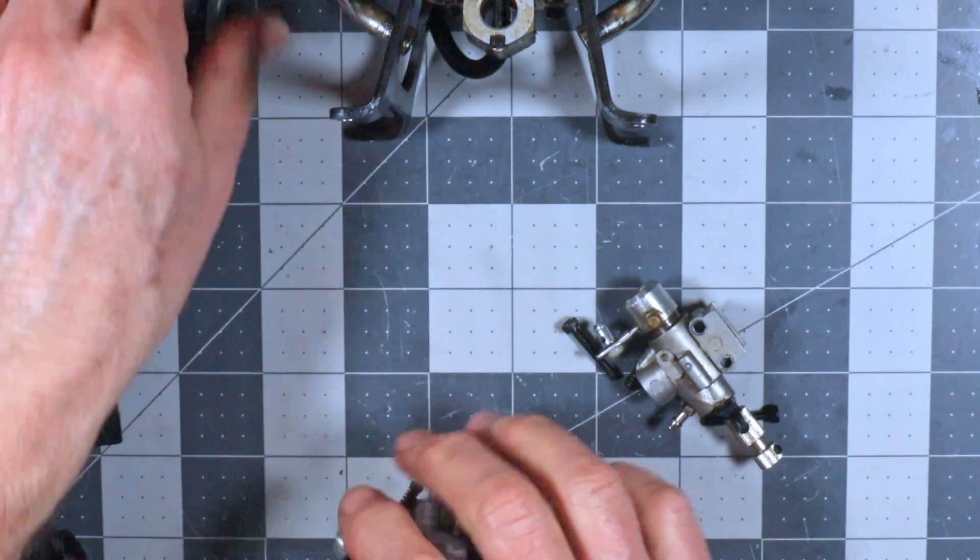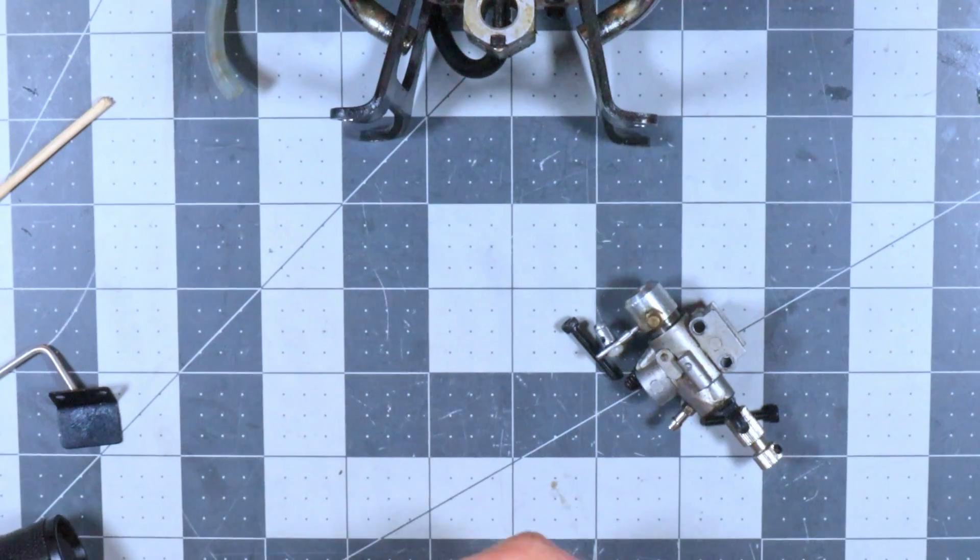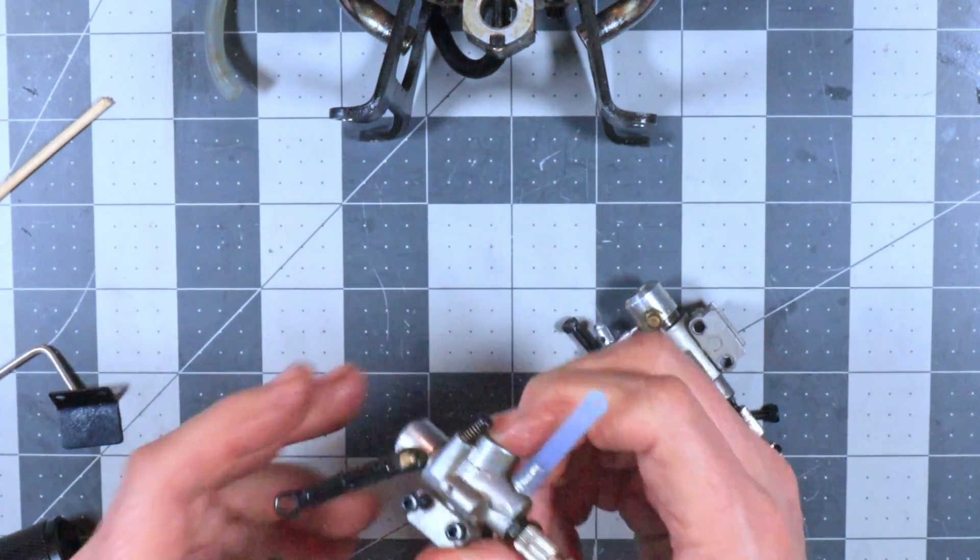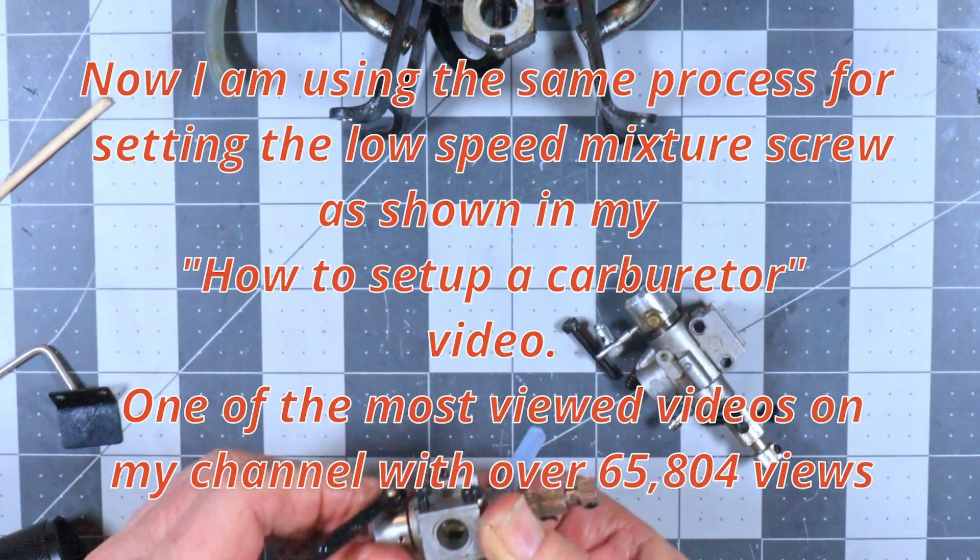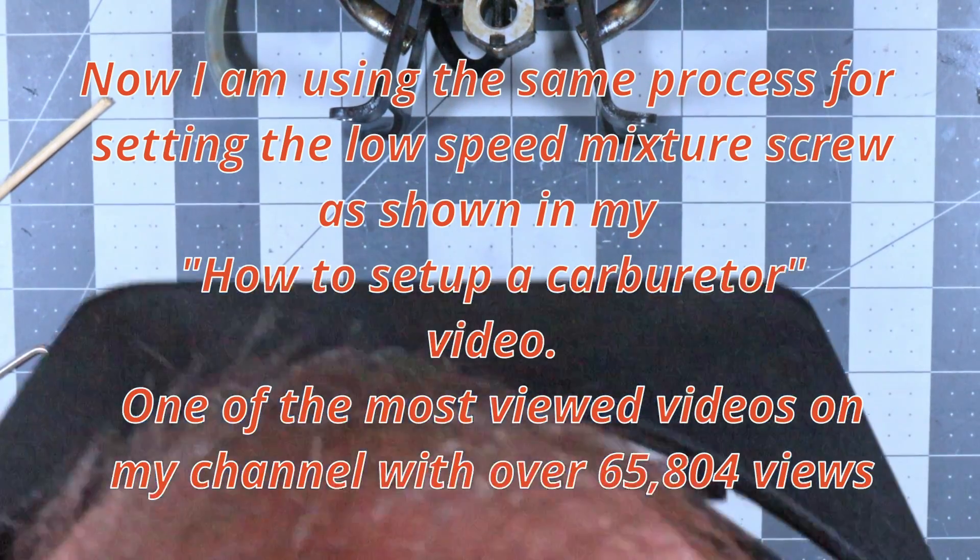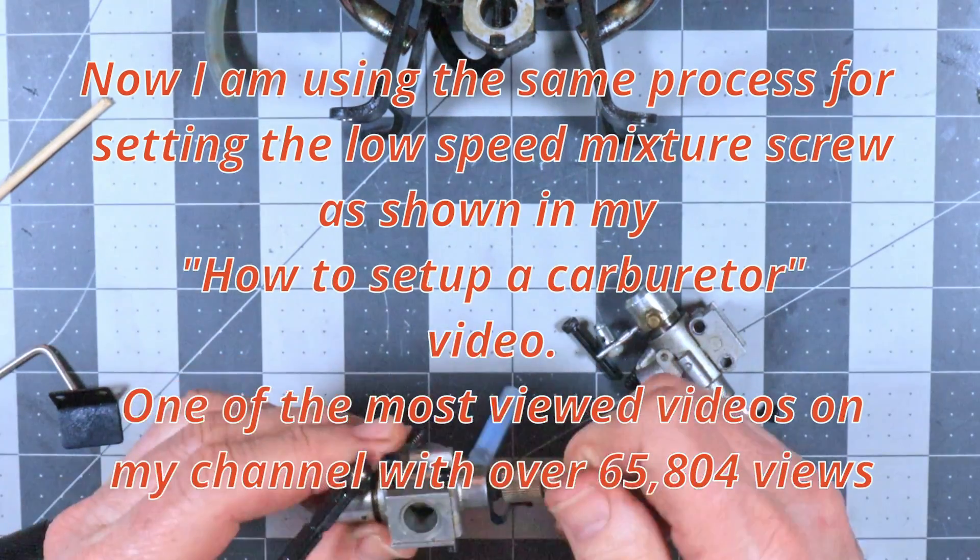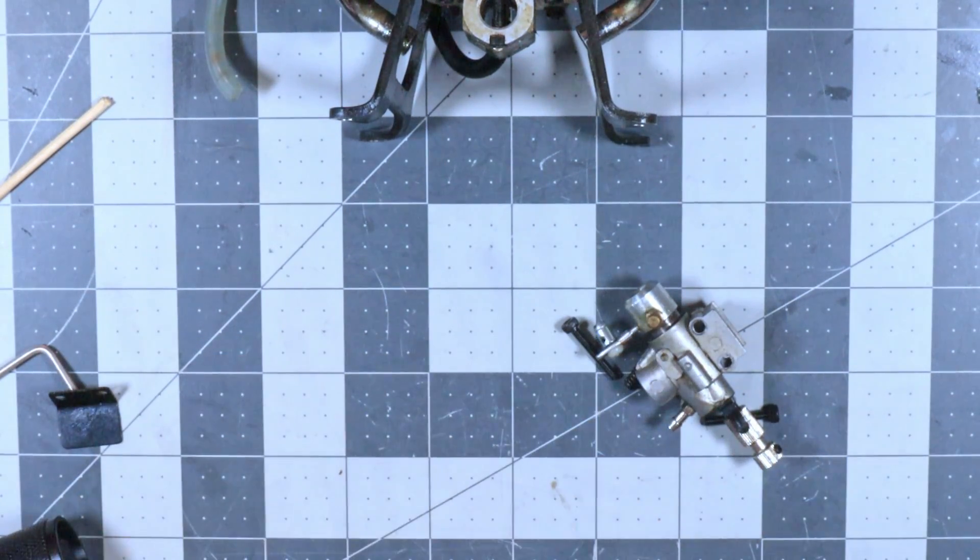Okay so now what I can probably do here is put a little short piece of fuel tubing on here. Close this high speed needle completely.